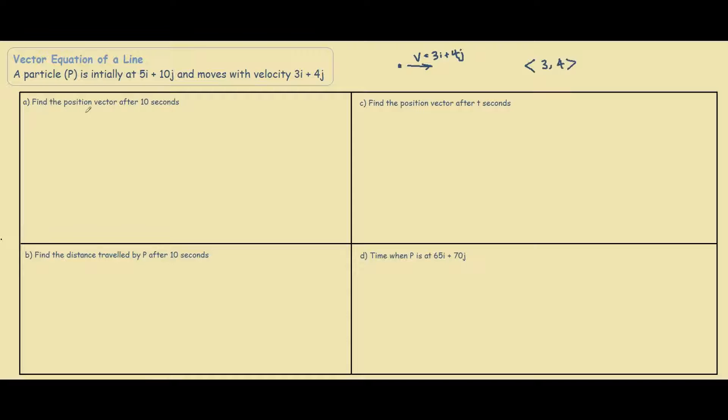It asks us to find the position of the vector after 10 seconds. We know that the position of the vector starts off at 5i plus 10j, so after 10 seconds it must move 10 times the velocity 3i plus 4j, and we denote the position of the vector as OP.